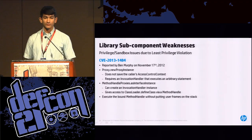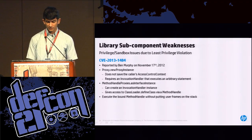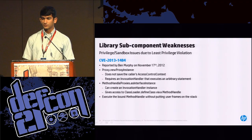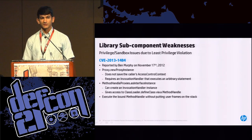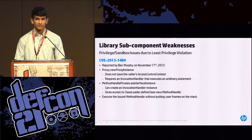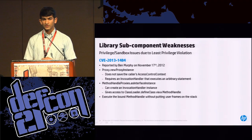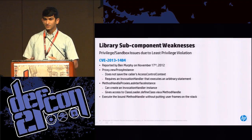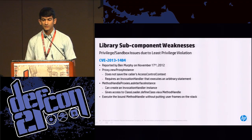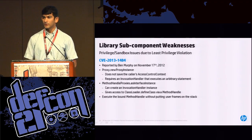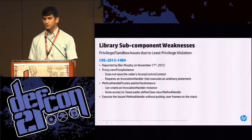The next weakness is also in the library subcomponent — a privilege and sandbox issue due to least privilege violation. Least privilege violation exists because of the AccessController's doPrivilege blocks, which take two arguments: a class that exposes a run method that gets run at a different context, and an optional AccessControlContext — a saved state of the security context. When running an untrusted applet, you have a much lower privilege level than library code, which can do whatever it wants.